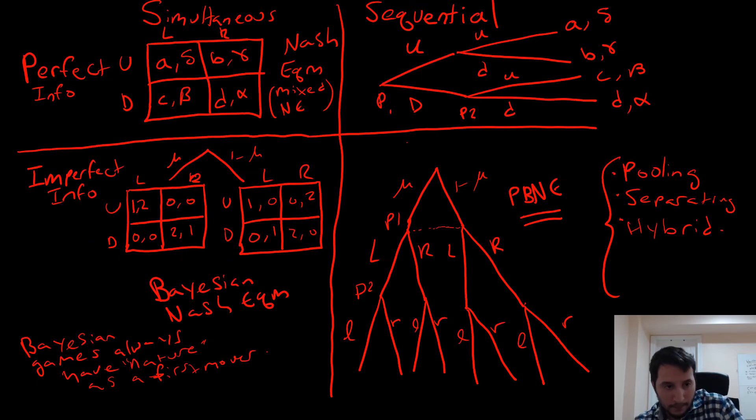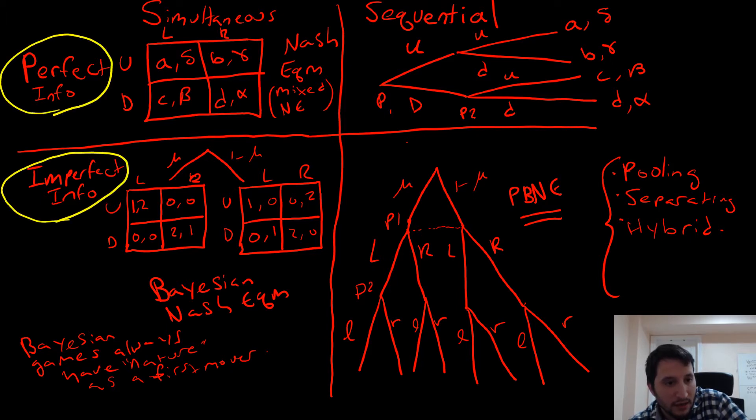There are really four different types of games that vary across two criteria: information and timing. We have games of perfect information, games of imperfect information, simultaneous move games, and sequential games.